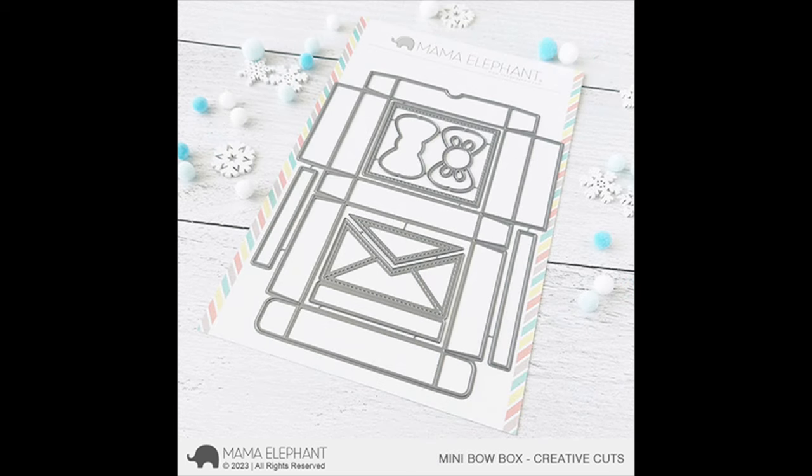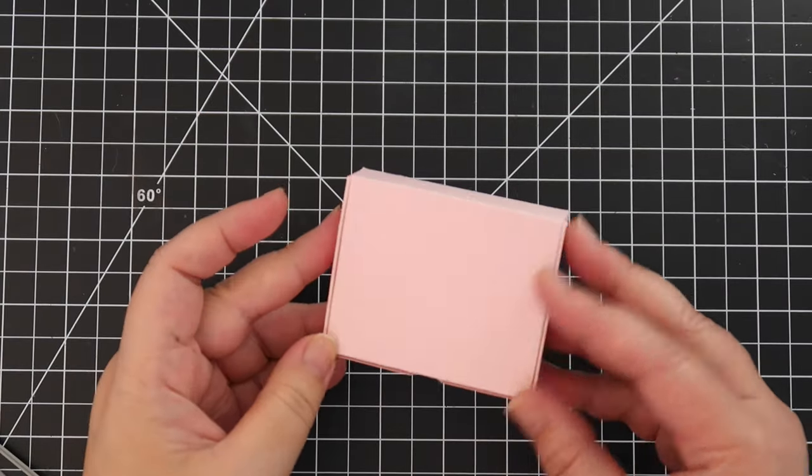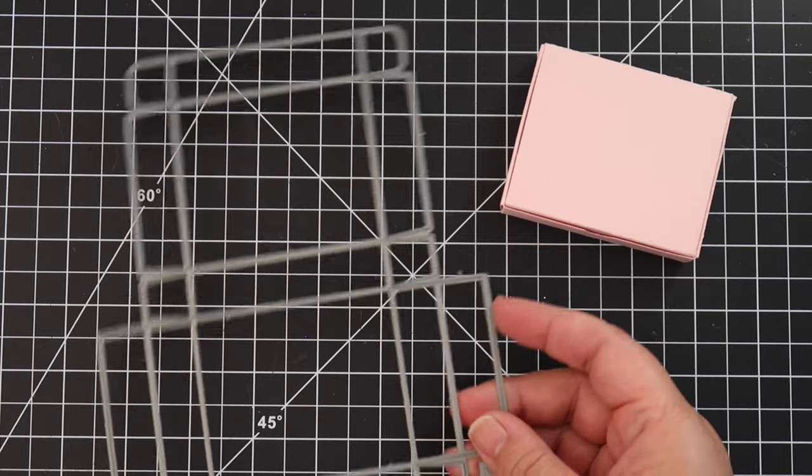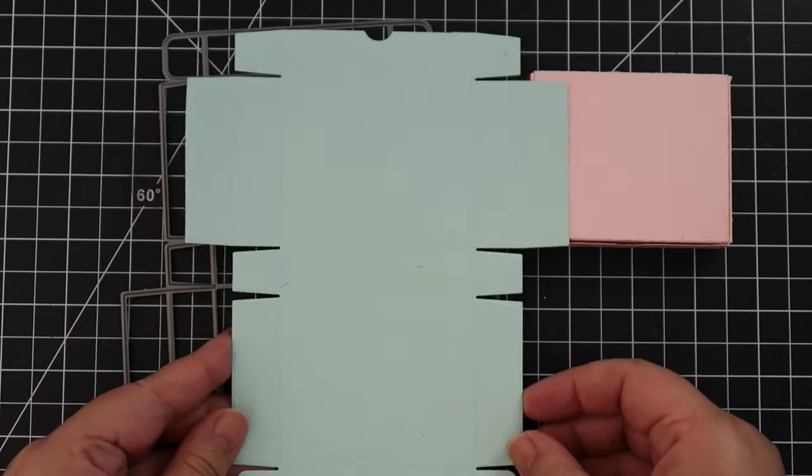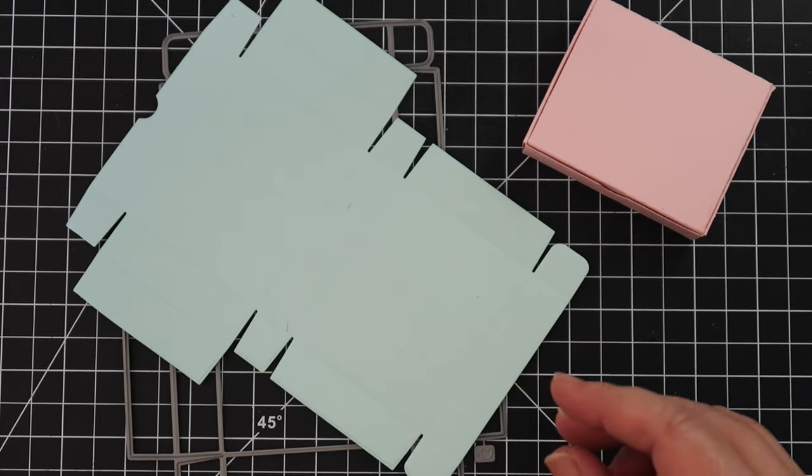Today we will be making four favor boxes out of the Mini Bowbox Creative Cuts. This is what the box looks like when you're done putting it together. It encloses like a pizza box. Here is the larger die in the Creative Cut Set, and that makes the box itself.